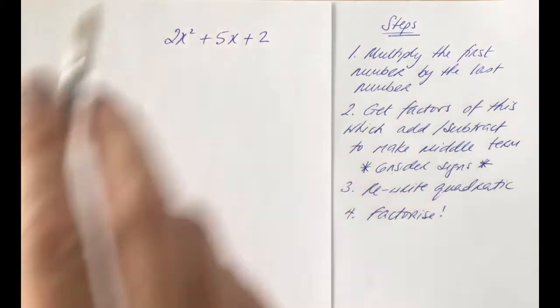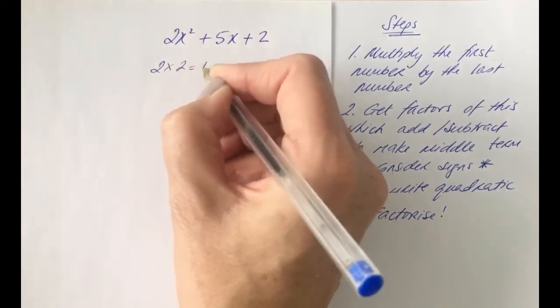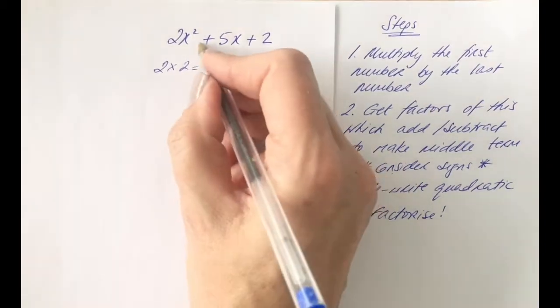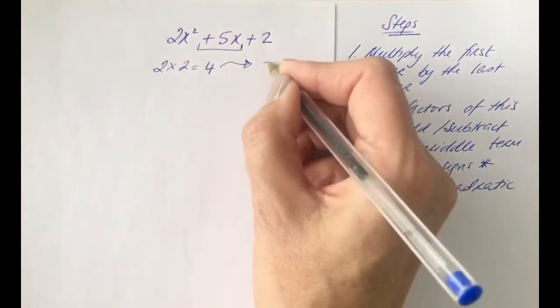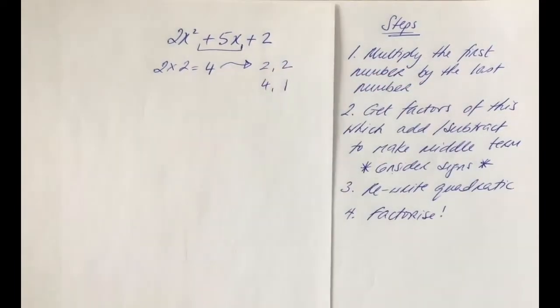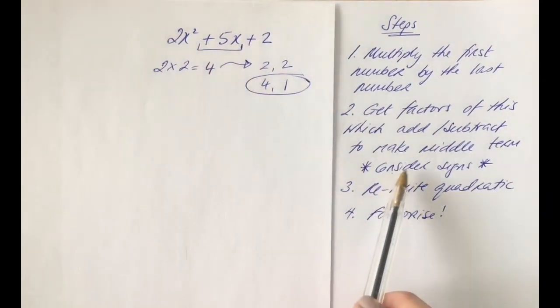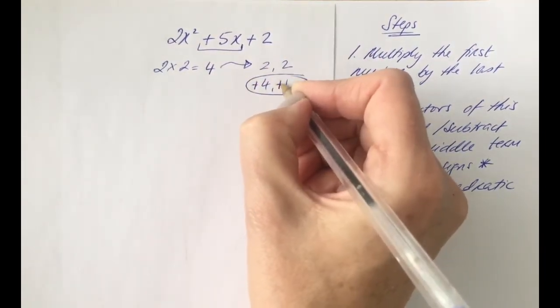So step one, multiply the first number by the last number. So 2 times 2 is 4. So now we want factors of 4 that will make our middle term. Factors of 4 would be 2 times 2 or 4 times 1. The pair that's going to work here is 4 and 1. If I want to make a plus 5, don't forget to consider your signs here now in step 2. It would have to be a plus 4 and plus 1.